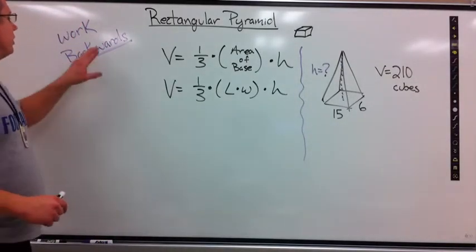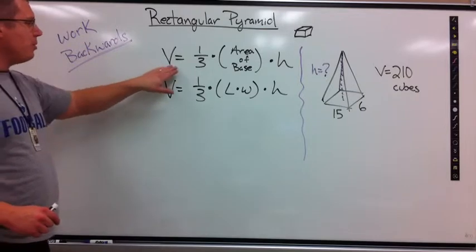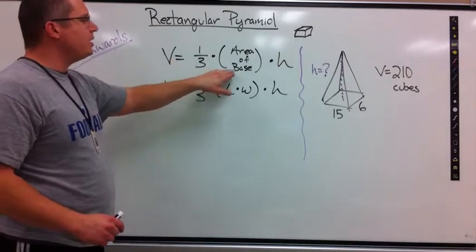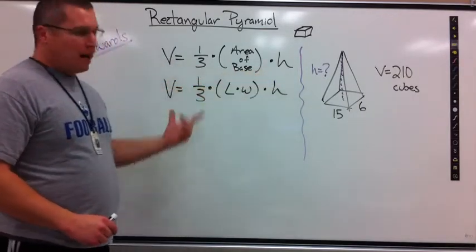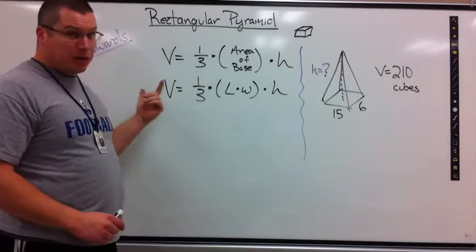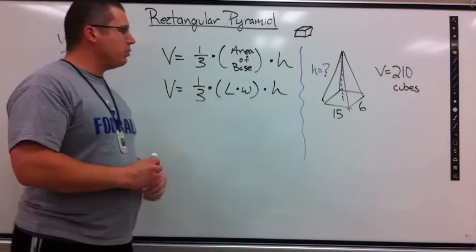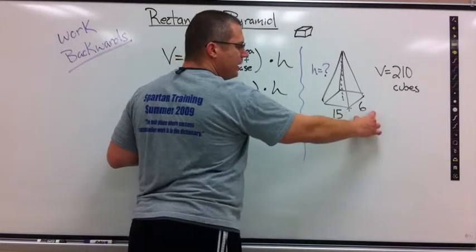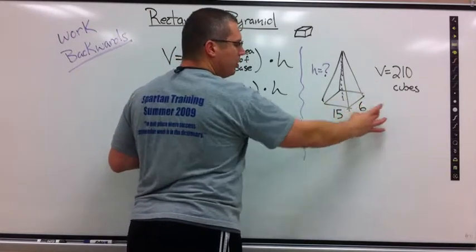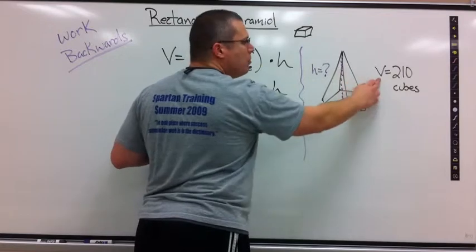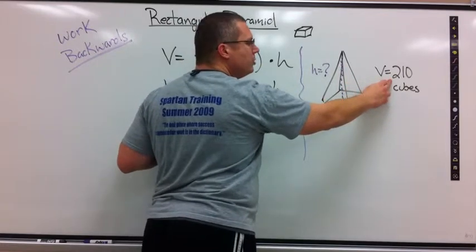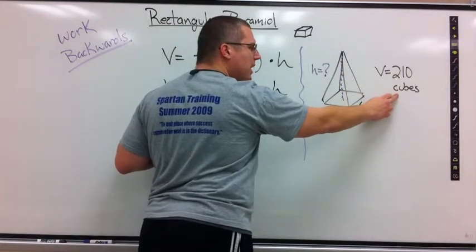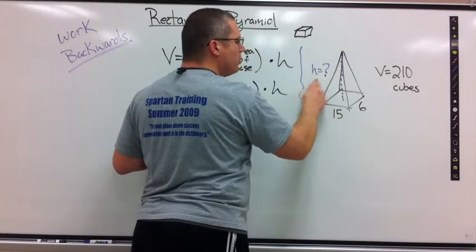Time to work backwards. Take my formula, volume equals 1/3 times area of the base times height. Area of the base is a rectangle, so we can also use length times width. My picture is this, 15 by 6, it's not drawn to scale, so it looks a little off. The volume already is figured out to be 210 cubes. So that is my answer. What we want to know is what is the height.